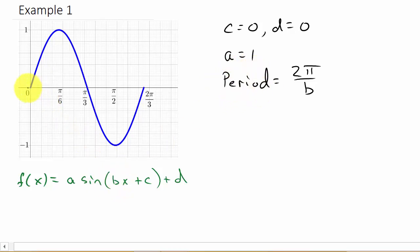The period is the distance of one cycle of the graph. Here's one cycle, and then it keeps going this way and keeps going this way. It just keeps repeating. We can see that the period here is equal to two pi over three minus zero, which is two pi over three.